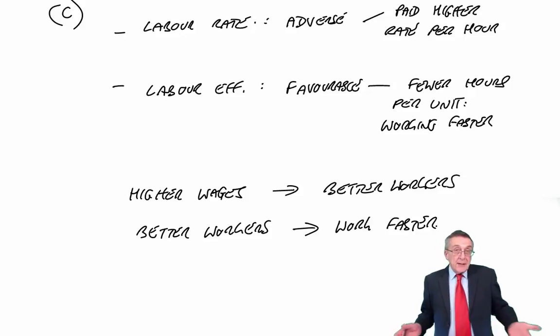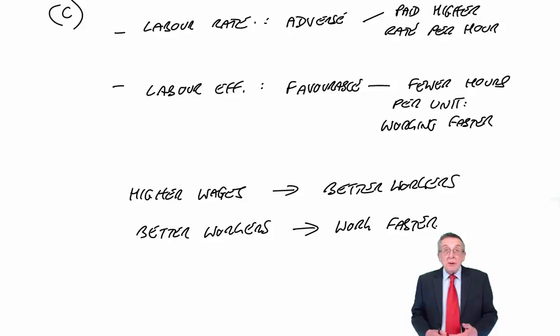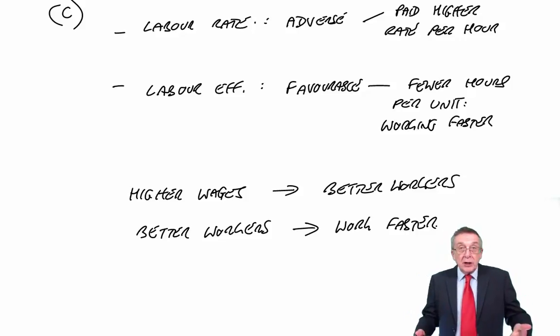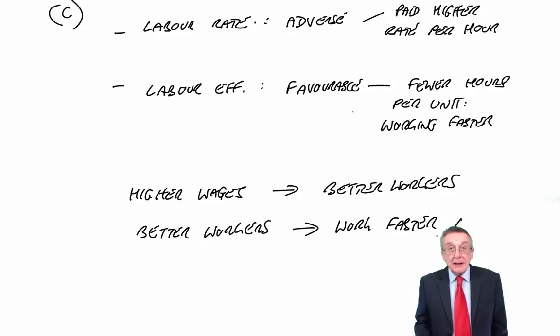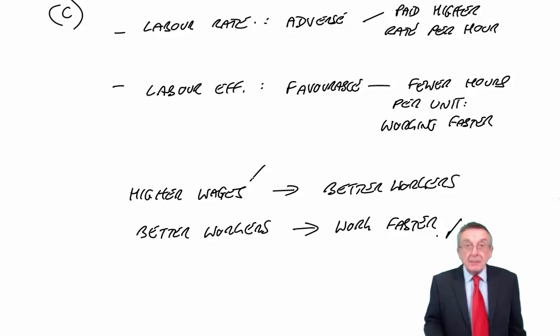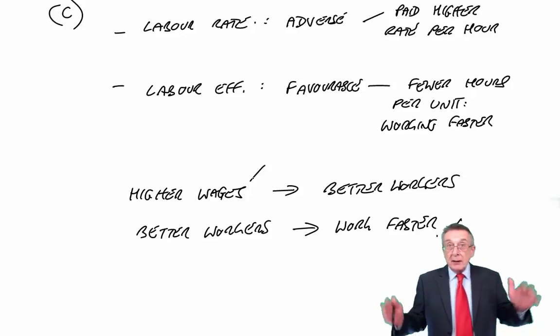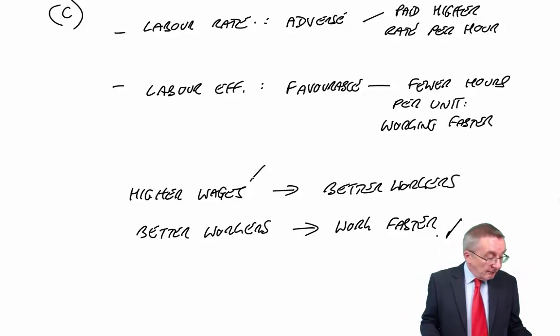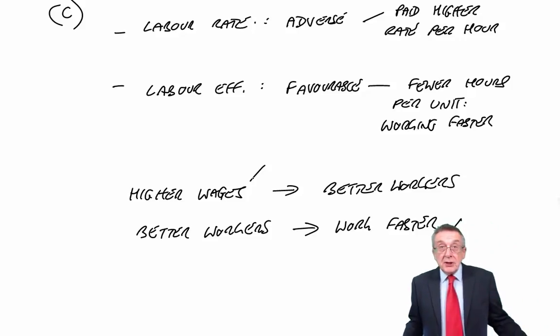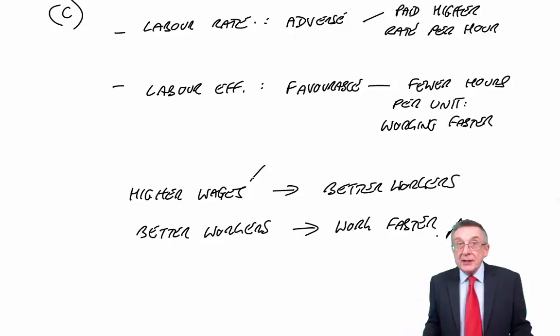The other way you could have put it, similar idea, is that maybe it was the same workers, but you told them that if they work faster, then you'll pay them more. Well, same idea. If they do work faster, that gives us our favourable efficiency variance. We pay them higher wages because they've worked faster. So either way round, it's interrelated. How would the two be connected? Okay, well, that's question two, so all that remains is to look at question three.